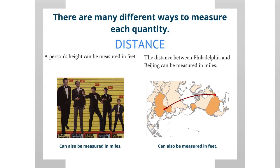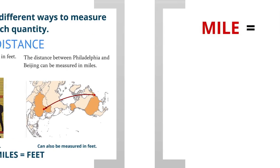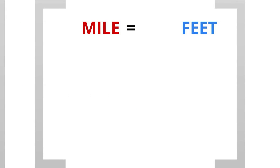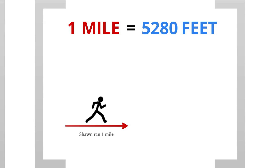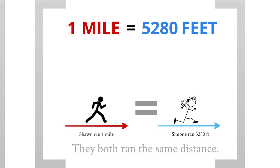Therefore we can set miles equal to feet. 1 mile equals 5,280 feet. So if Sean ran 1 mile and Simone ran 5,280 feet, they will have both run the same distance.